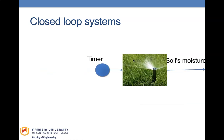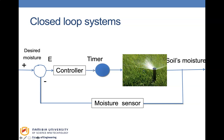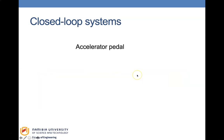To convert the sprinkler system into a closed loop system, we need a moisture sensor to measure the moisture of the surrounding soil. The measured soil moisture is compared with the desired moisture to produce an error signal, and this error signal drives the controller to control the timer until the desired amount of moisture is achieved.